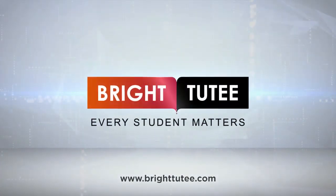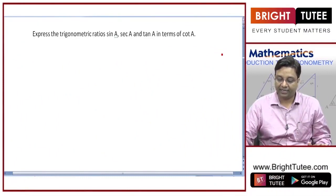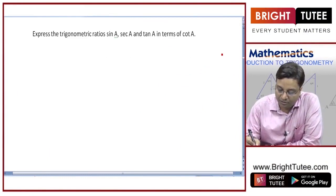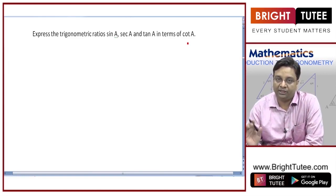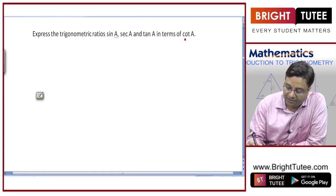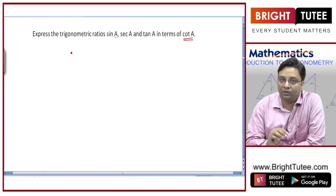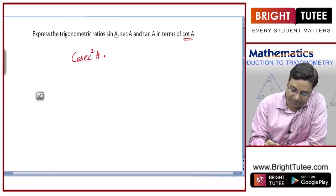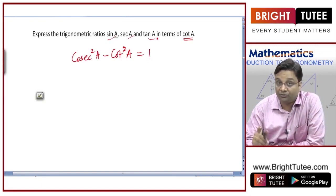Every student matters. Express the trigonometric ratios sine a, secant a, and tan a in terms of cot a. We can do this in numerous ways — we can directly use the identities. The identity involving cot is: cosecant squared minus cot squared equals one.